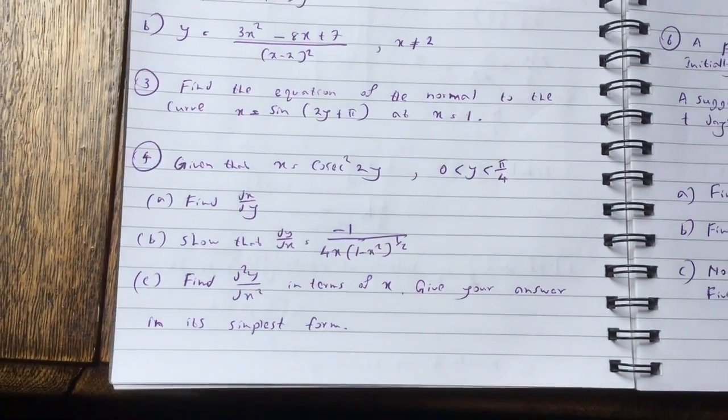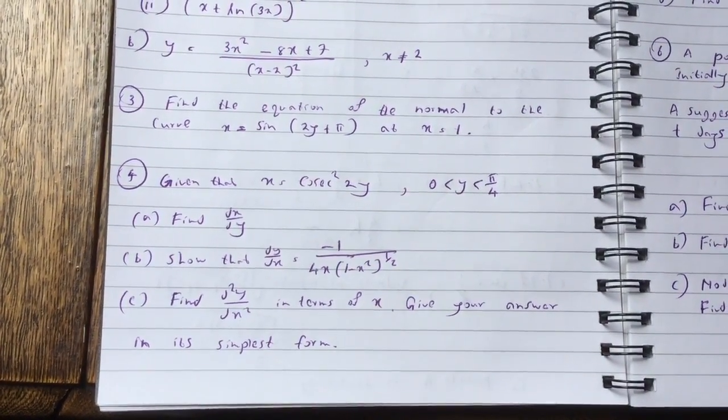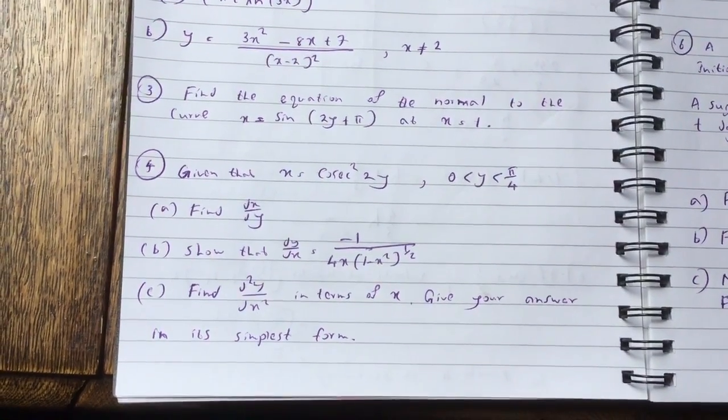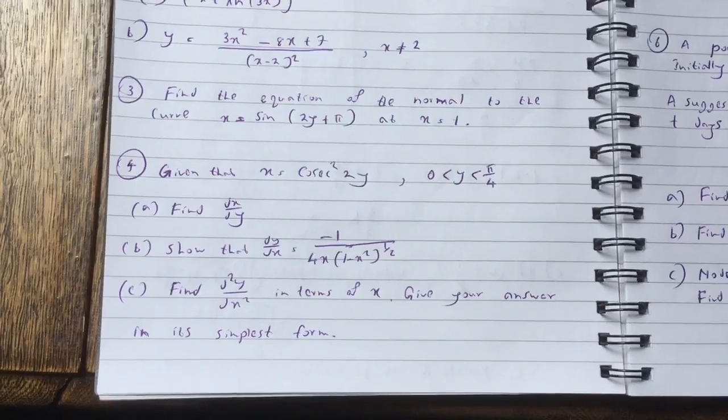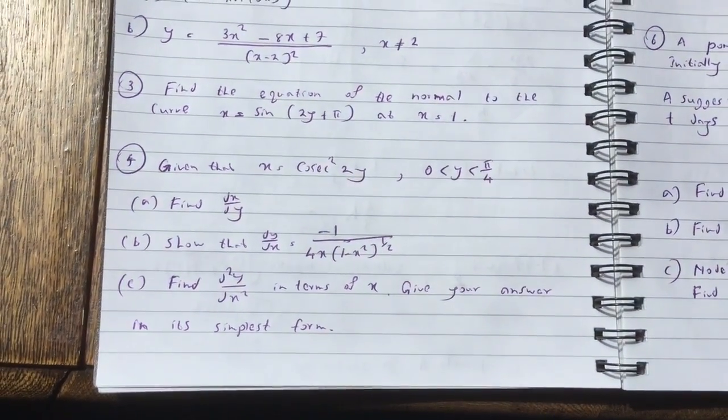Question 4, given that x equals cos squared 2y, y is between pi over 4 and 0. Question A, find dx dy. Question B, show that dy dx equals minus 1 over 4x bracket 1 minus x squared to the half.